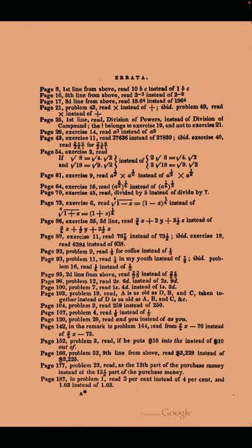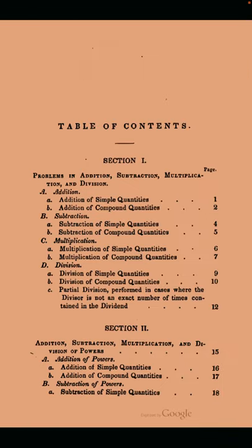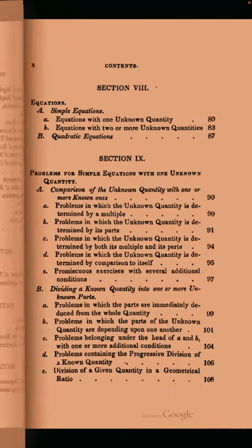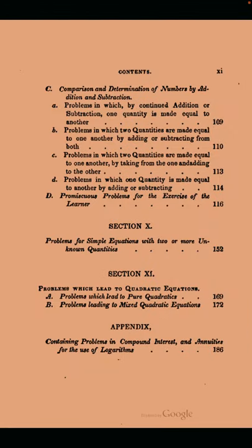We have errata, so we seem to have rushed the book to print somewhat. For example, page 8, first line from above, read '10 BC' instead of '1 BC.' So it's just printing errors, a lack of proofreading. Okay, table of contents. We're going up to logarithms. Simple equations. Quadratic equations. Yay.